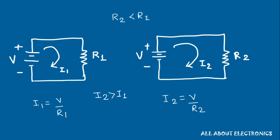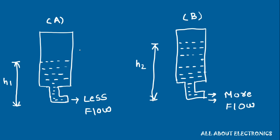Now let's take a second example in which we have two water tanks with the same diameter hose pipe, but different water levels. In the first tank there is less water, so the pressure at the bottom of the hose pipe is less and the flow of water will be less. In the second tank, as it contains more water, the pressure at the bottom is more and the flow of water will be more.